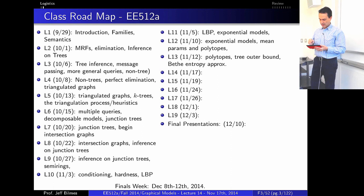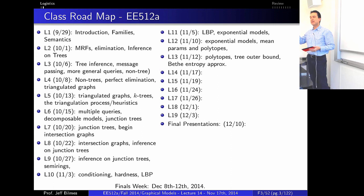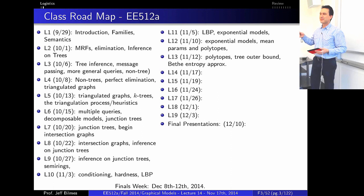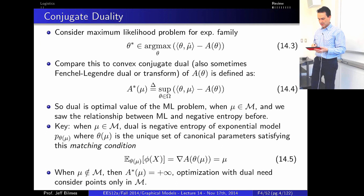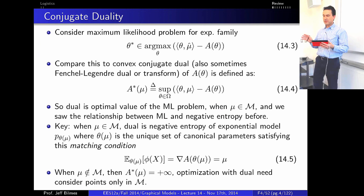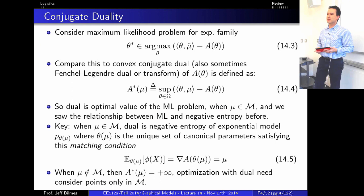Today we're going to finish up on the beta free energy approximation and the beta entropy approximation, talk about something called loop series correction or loop series approximation — a way of going between the approximation and the truth — and then start on the hyper-tree variant of the beta entropy approach. This is a somewhat technical lecture; the goal is to impart a strong intuition about what's going on.